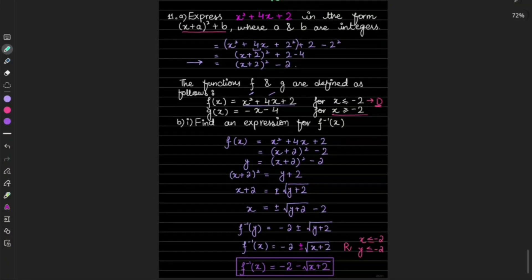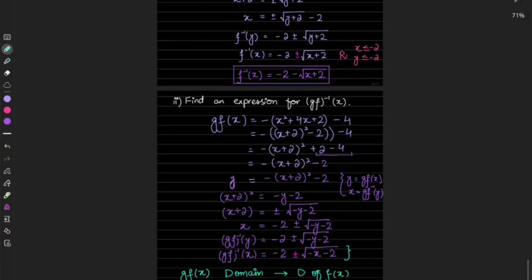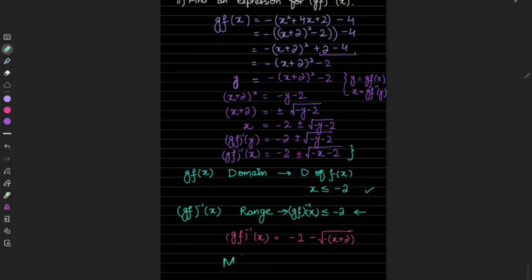These questions on inverse functions are not very difficult — only the domain and range causes a little confusion. We need to understand how domain and range work for composite functions as well. That's all for this paper, May/June 2025 Variant 12. If you have any queries or suggestions, write in the comment box, or visit the mathematics website for the full PDF solution. Thank you very much.